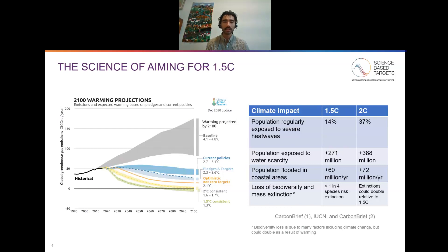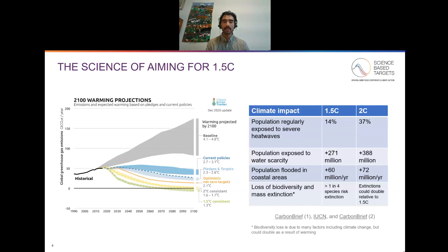The table on the right of this slide shows the climate impacts associated with one and a half degrees of warming compared to two degrees of warming, and that special report published by the IPCC really underlined the importance of the one and a half degree goal in global climate action efforts. On the left here, you'll see that we are still very far off from the one and a half degree goal. Even with existing pledges, targets, and current policies, we're still looking at around two and a half degrees of warming, so there's quite a long way to go.